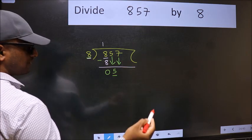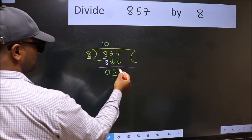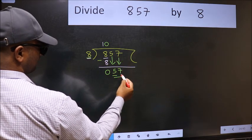And the rule to bring down the second number is we should put 0 here. Then only we can bring this number down. Now 57.